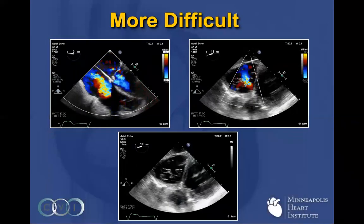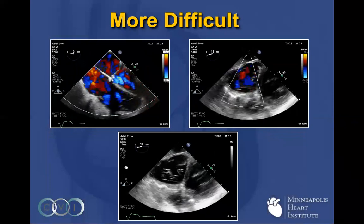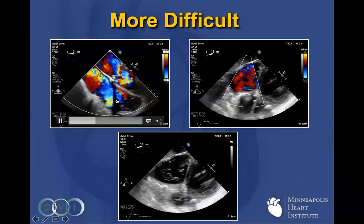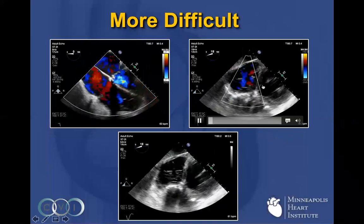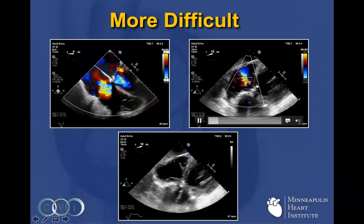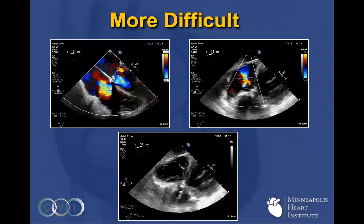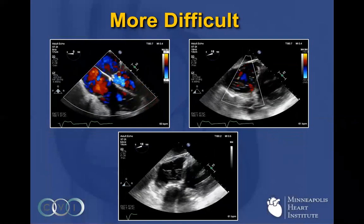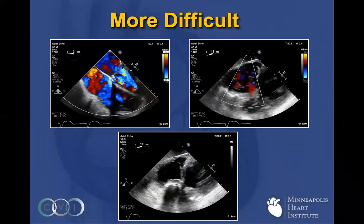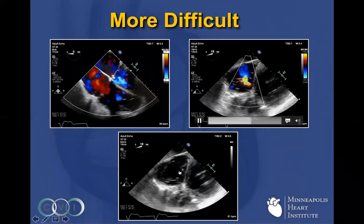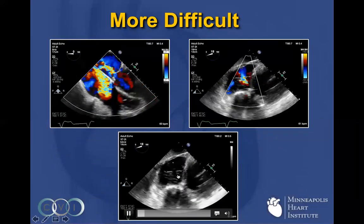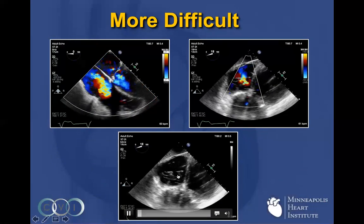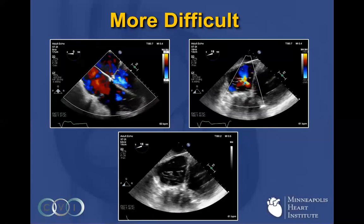Here's an example of a patient that's much more difficult. Here's a four-chamber view showing completely torrential tricuspid regurgitation. This transgastric short-axis view shows a very large amount of TR spanning both the anteroseptal and posterior septal commissure. Without color, you can see how wide these gaps are — this gap was well over a centimeter. It would not be easily treatable with the MitraClip device.